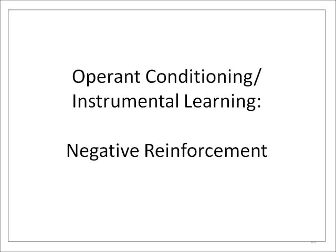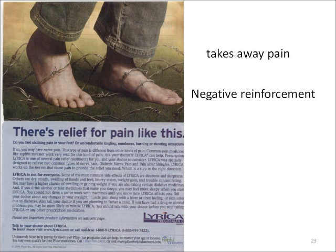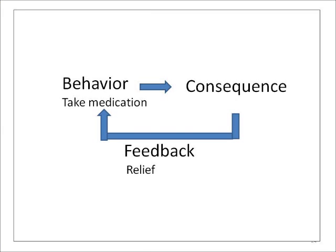In operant conditioning, one consequence of behavior is the removal of something negative, or the prevention of something negative from happening. This type of consequence is termed negative reinforcement. Negative reinforcement increases the chance that the behavior will occur again. In this ad, the consumer is in pain. By taking a medication, the pain is removed and brings relief to the consumer.